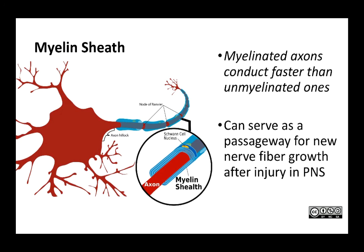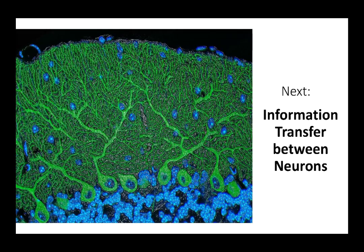That's our introduction to the structure of the major types of cells in the nervous system — neurons and glia. We talked about sensory neurons, which are part of the afferent path; interneurons, which are located exclusively in the central nervous system and sit between other neurons; and motor neurons, which carry commands to effectors. Then we talked about the six different types of glia: microglia, ependymal cells, astrocytes, and oligodendrocytes in the central nervous system, and Schwann cells and satellite cells in the peripheral nervous system. In the next video, we're going to talk about how information is transferred between neurons.